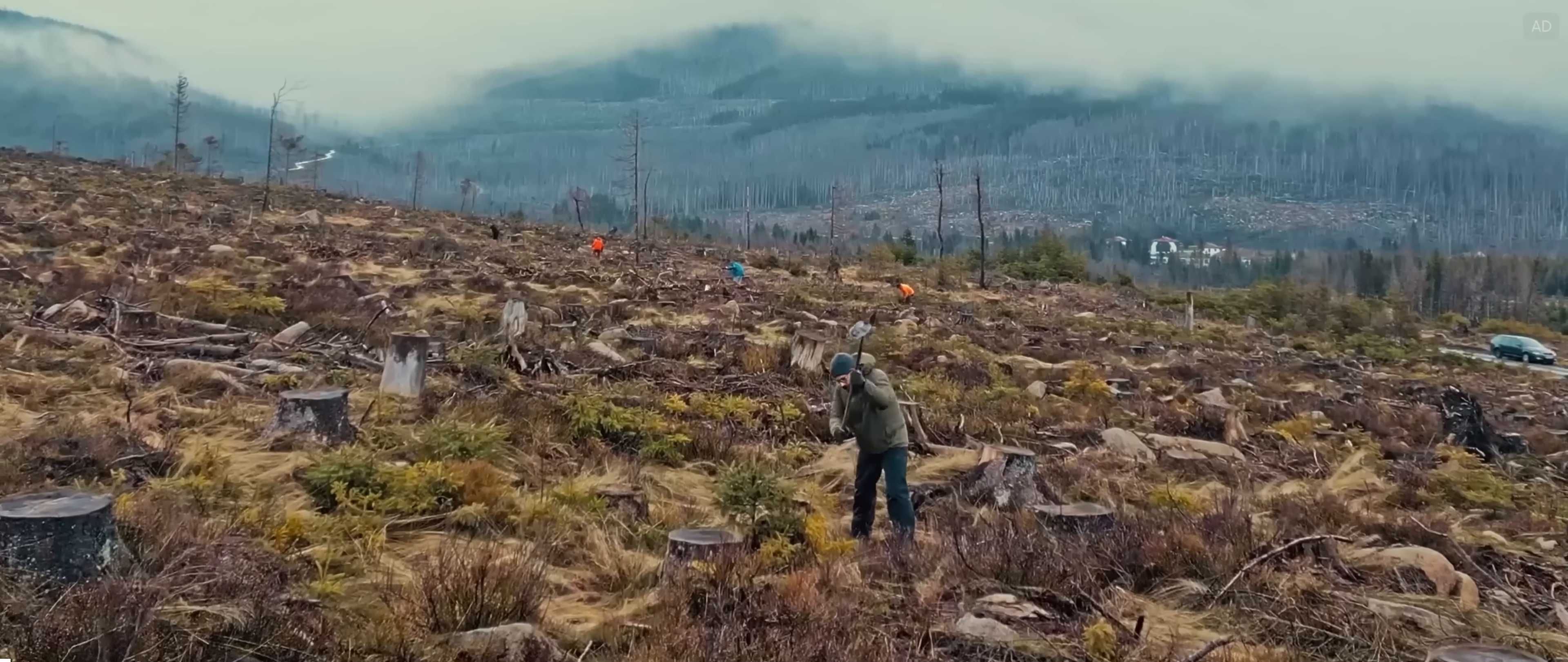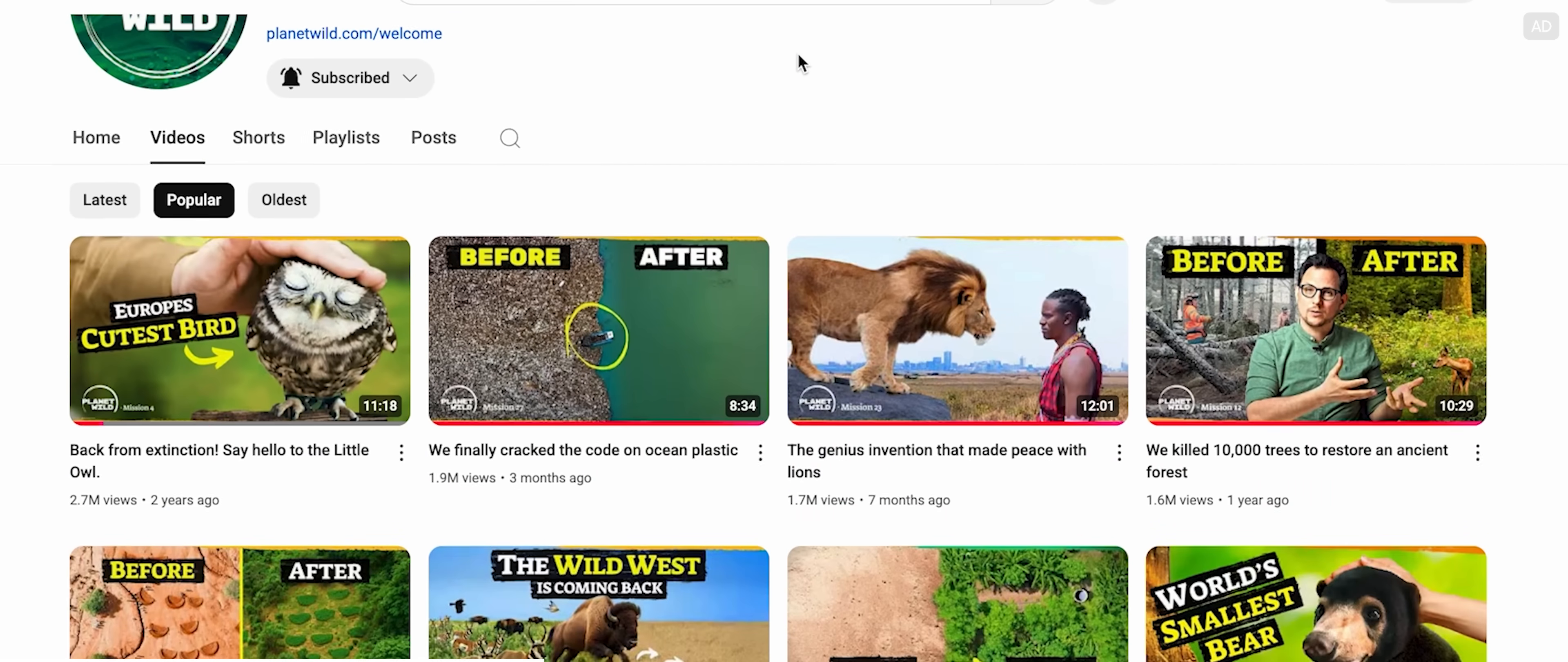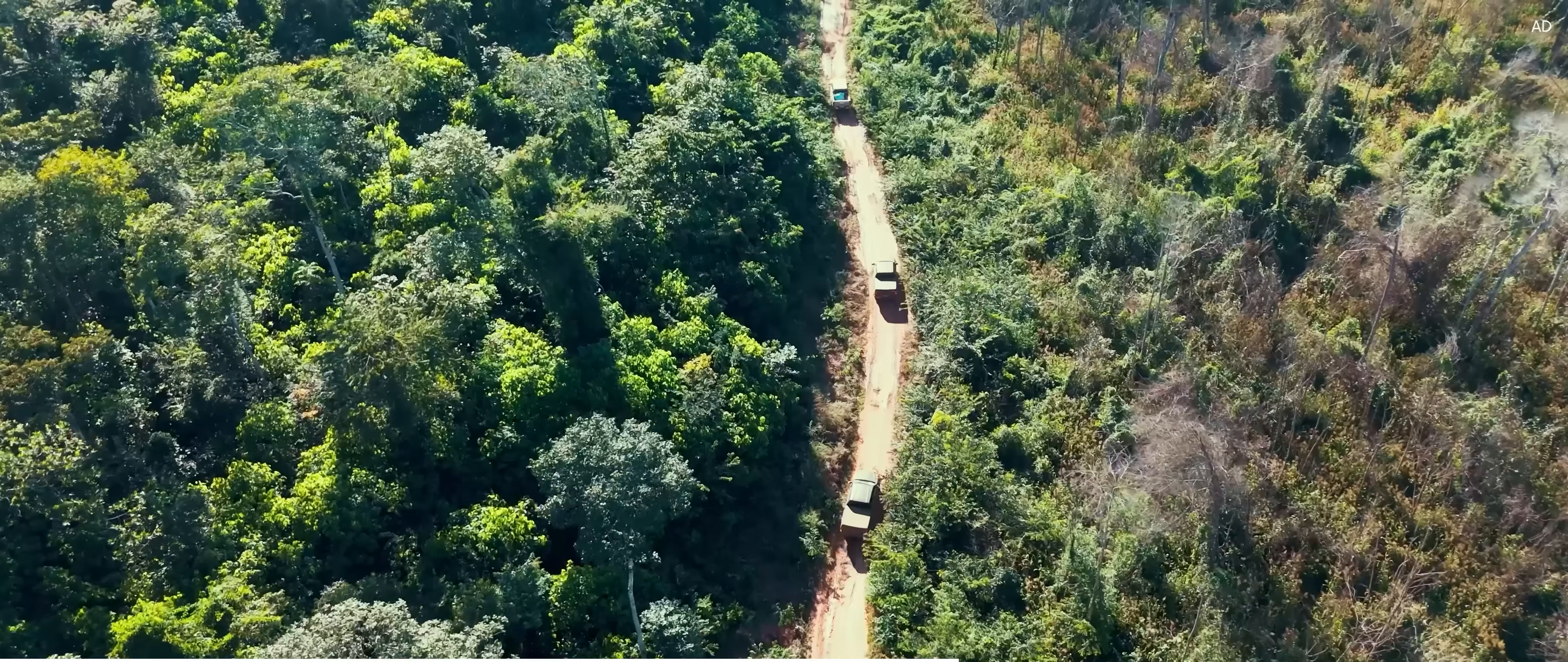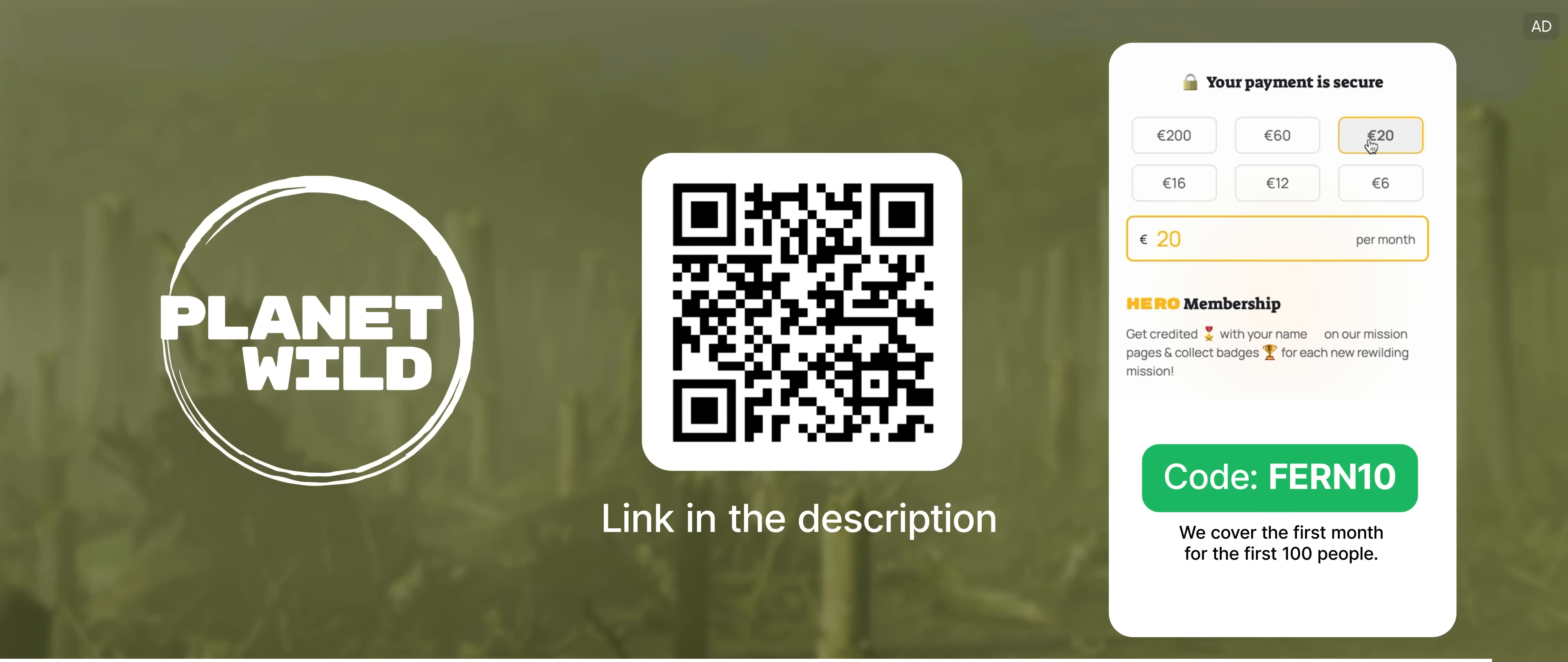Planet Wild is a community-based environmental protection organization. Think of it as crowdfunding for nature. Every month their community funds a carefully selected rewilding project to restore forests, bring back endangered species, and protect the oceans. Planet Wild documents all their projects in monthly videos so you can see how your contribution helps to protect nature. In one of their latest projects, they use chainsaw detectors to protect one of Europe's last ancient forests. Of course, environmental protection also involves broader systemic and regulatory change. At the same time, collective efforts like these are essential to the larger cause. Support Planet Wild's mission by scanning the QR code or clicking the link in the description. Pay whatever amount feels right for you. The first 100 people to sign up using our code FERN10 will get their first month covered by us. You can cancel any time after that.